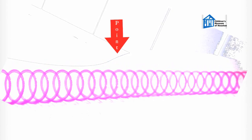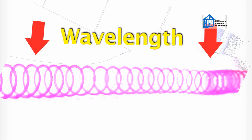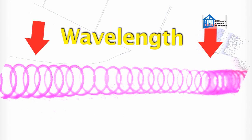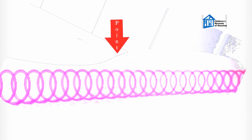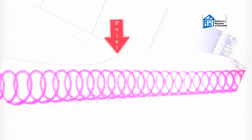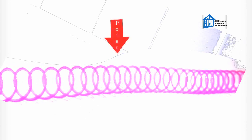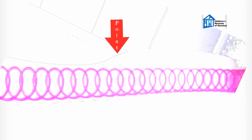Because sound travels at the same speed, the wavelength — literally the length of a wave — determines pitch. Sounds with long wavelengths pass the point less often, so you have a lower pitch. But sounds with a short wavelength pass the point more often, so they have a higher pitch.